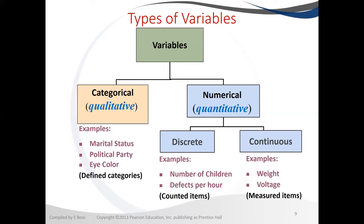Continuous variables are those variables that are measured. With continuous variables, we can measure the premium — how much premium we have collected, how much premium is still outstanding. We can also collect data about age. Age is continuous — how old your insurance policyholders are, how old the people you have insured are.